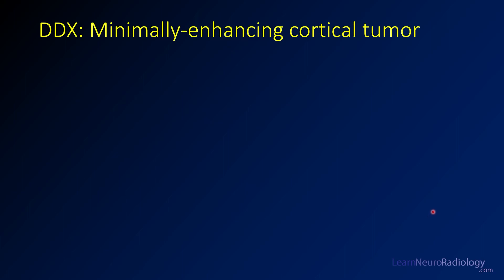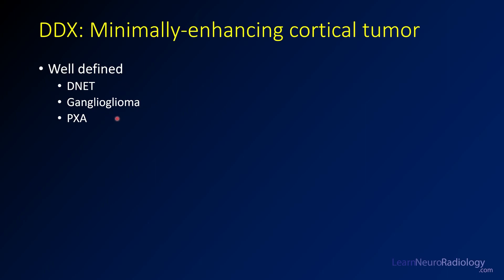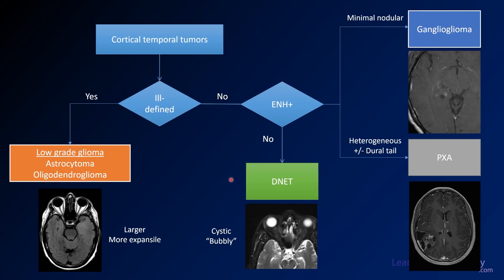Here we have to think a little bit about our differential for minimally enhancing cortical tumors. We think about whether they're well-defined — well-defined lesions include DNETs, gangliogliomas, and PXAs. If they're ill-defined, we want to think about low- and intermediate-grade gliomas, depending on how much enhancement we're seeing. We've seen this chart before — this is an approach to cortico-temporal tumors.